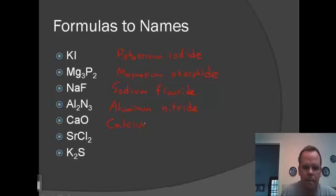CaO: calcium oxide. SrCl2: strontium chloride. And finally K2S: potassium sulfide. If it were a polyatomic, we would not change the ending. But for any element, we change the ending to IDE.